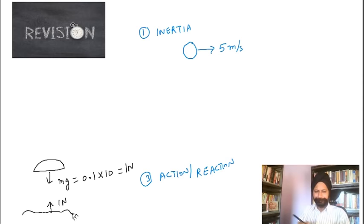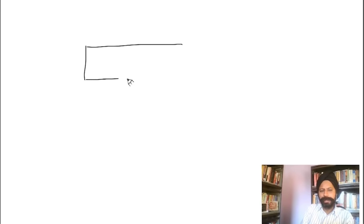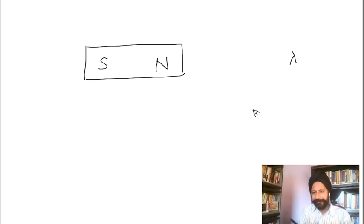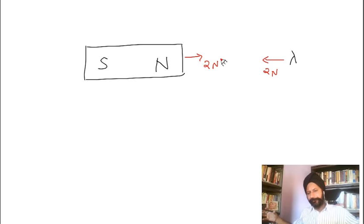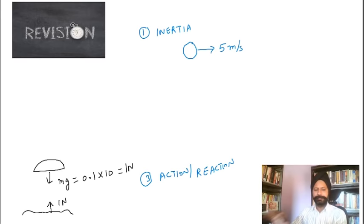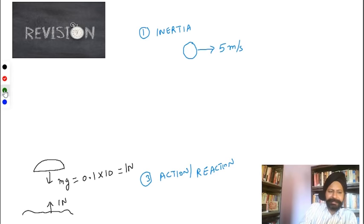Another example: a large magnet with a north and south pole pulls an iron pin. Let's say the force is two newtons. The pin pulls the magnet back with the same two newtons, even though the pin is tiny. Two newtons might be too much for the pin but too little for the magnet — that's why you see the pin moving toward the magnet, not the other way around. No force is in isolation; all forces come in pairs. That is the third law.